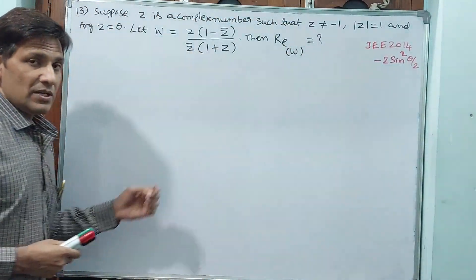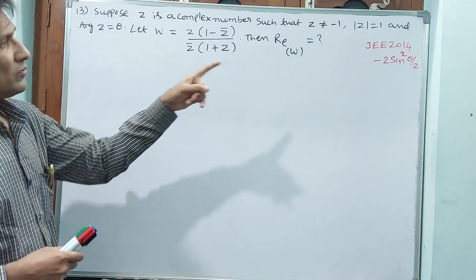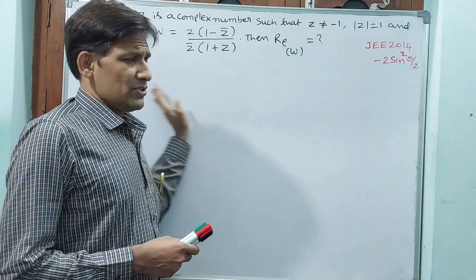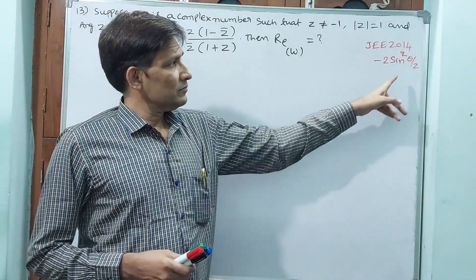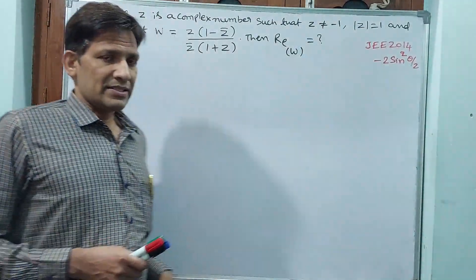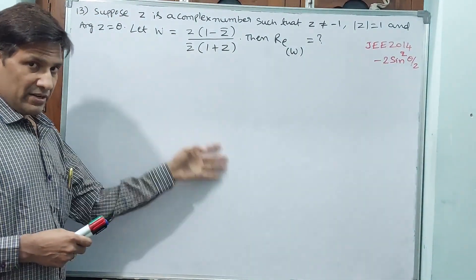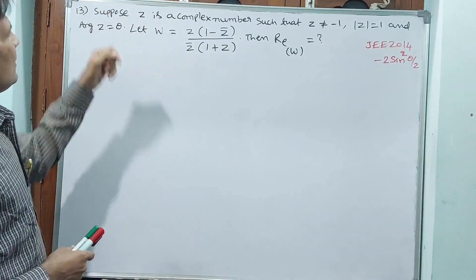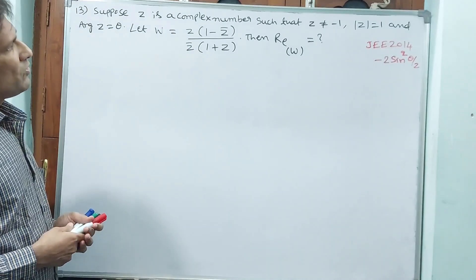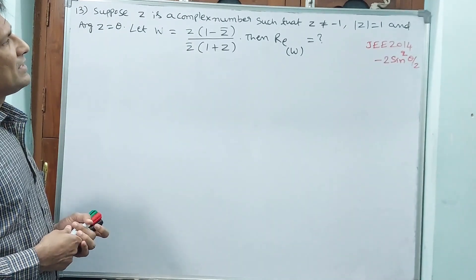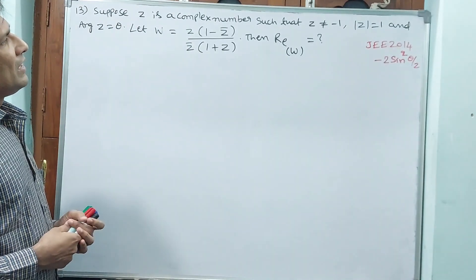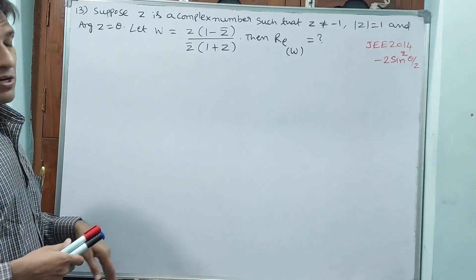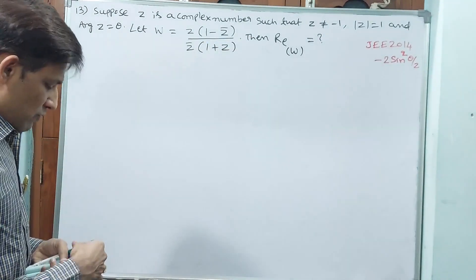This question is from JEE 2014. I have written the direct answer here rather than A, B, C options because that may take much space. Suppose Z is a complex number such that Z is not equal to minus 1, and modulus of Z is 1.